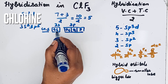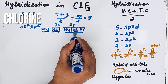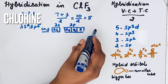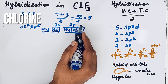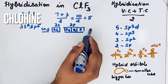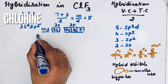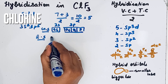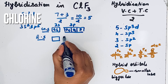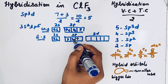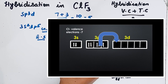In the excited state, one of the electrons from the 3p orbital can move to the 3d orbital, because chlorine is in the third period and therefore has the availability of d orbitals. So in the excited state, one electron from the 3p orbital moves to the 3d orbital.